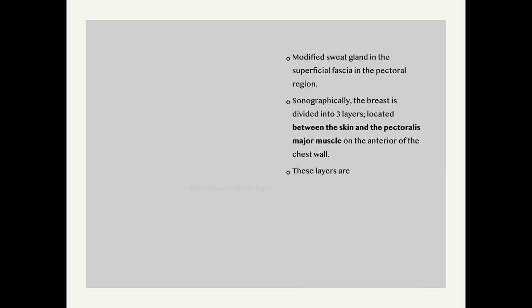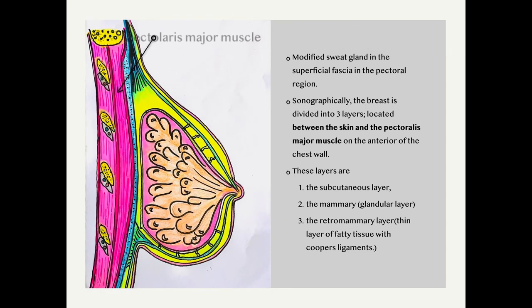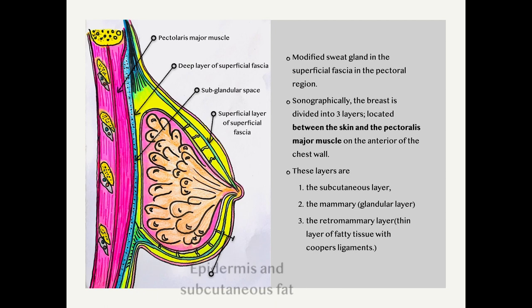Sonographically, the breast is divided into three layers located between the skin and the pectoralis major muscle on the anterior of the chest wall. These layers are the subcutaneous layer, the mammary or glandular layer, and the retromammary layer, which is a thin layer of fatty tissue with Cooper's ligaments.